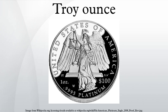At 480 grains, the troy ounce is heavier than the avoirdupois ounce, which weighs 437.5 grains — about 10% more than the avoirdupois ounce, which is 28.349523125 g. To maintain purity standards and common measures across time, the troy ounce was retained over the avoirdupois ounce in the weighing and pricing of precious metals.